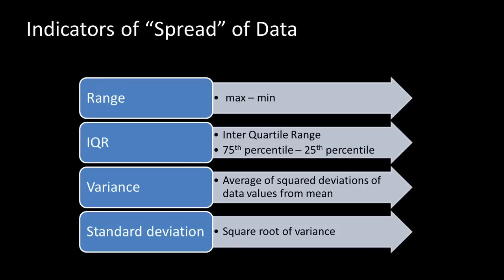For example, if we have a set of prices of products, then the range or spread is going to be from the lowest price — say $0.99 — to the highest price — say $15.99 — giving an overall range of $15.